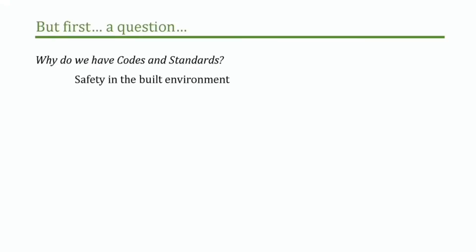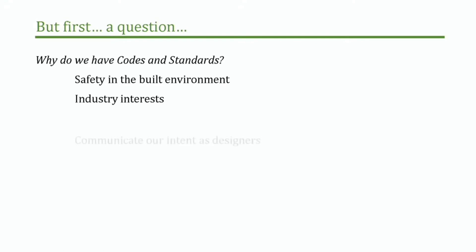Because there are students here, everybody's quiet. What's the primary reason for codes and standards? Usually the first answer is safety in the built environment. And that's certainly paramount. But we've got to recognize that the codes and standards process also serves industry interests — both to promote industry and to protect industry.